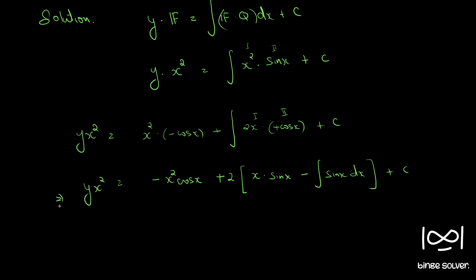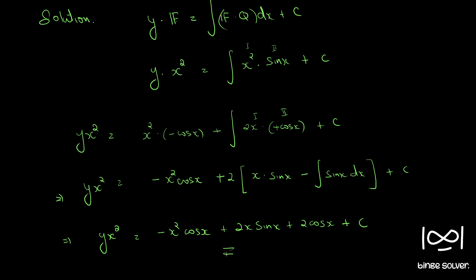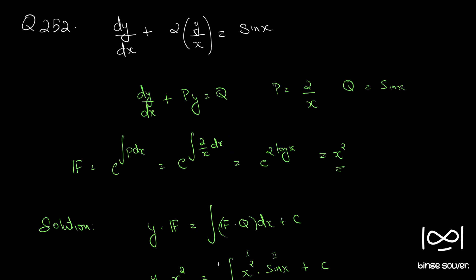So y x squared: the integral of sin x is minus cos x, so minus minus becomes plus 2. This is the final solution: x squared equals minus x squared cos x plus 2x sin x plus 2 cos x plus c. These are the steps — the solution to question 252. Thank you.